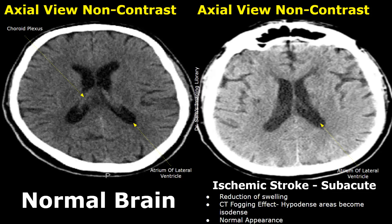In a subacute ischemic stroke, the time from onset is between one to three weeks. Stroke is difficult to diagnose during this period because the appearance on a CT scan may appear normal. The swelling subsides — we will not see any swelling during this period. And the hypodense areas start to become isodense, which leads to a normal appearance. In simple words, the density of the tissue at the affected site increases because of the repairing mechanism of the brain tissue, which works on reducing the swelling and attempts to repair the brain tissue.